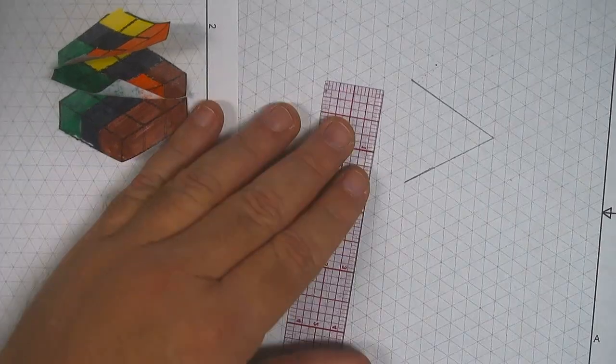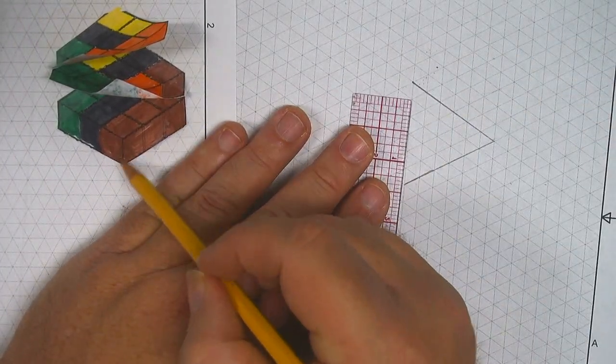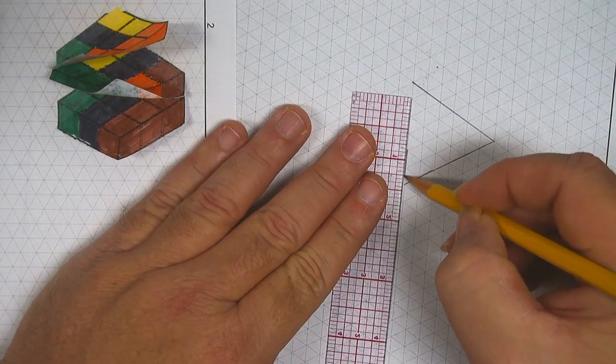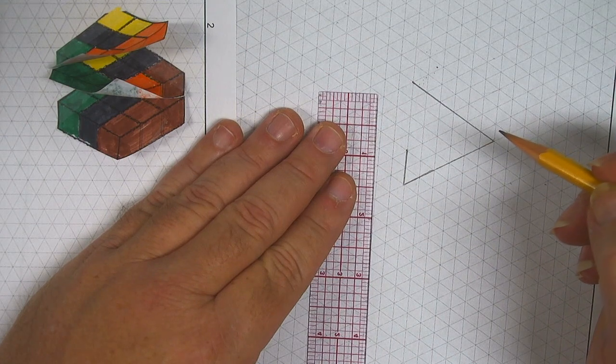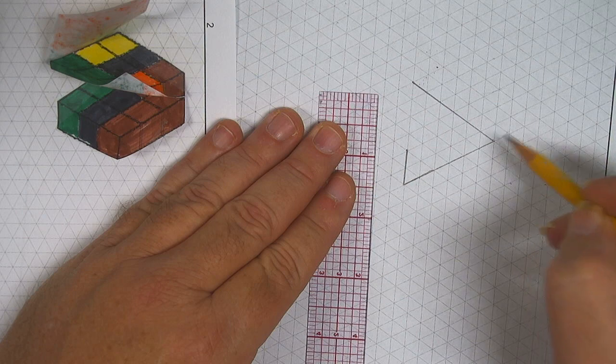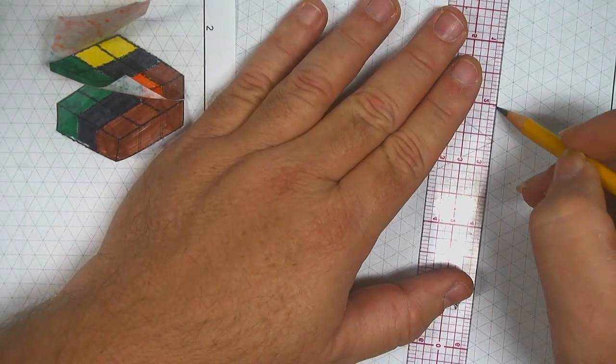Now I want to make my vertical edges. This is the edge that is closest to me, right here, and it's going to be two units tall. And then this edge here is also going to be two units tall, because it's just one cube.